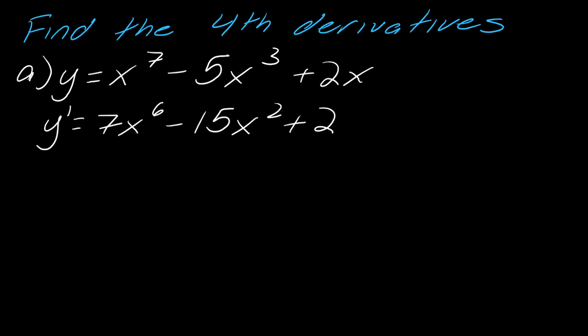So moving on to y double prime. Now I take the derivative of 7x to the sixth, which will be 42x to the fifth. And then I keep going. So this will be minus 30x. And then the two drops out. And then I've got y triple prime.